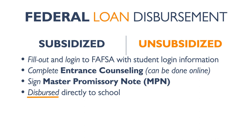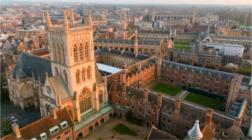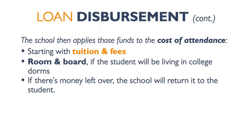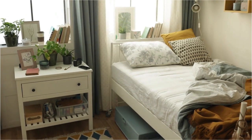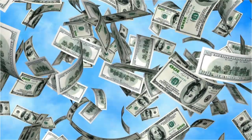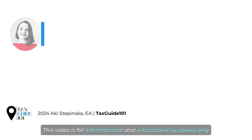Only after completing all these steps will the funds be disbursed directly to your school. Schools follow a specific order when applying disbursed loan funds to the cost of attendance: funds are first applied towards tuition and fees. If the student will be living on campus, room and board expenses are covered next. Only if there's any money left will the school return the excess funds to the student.